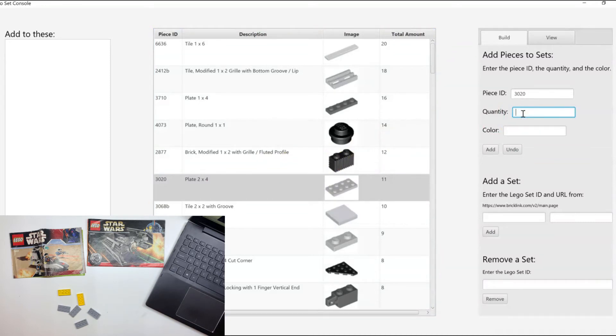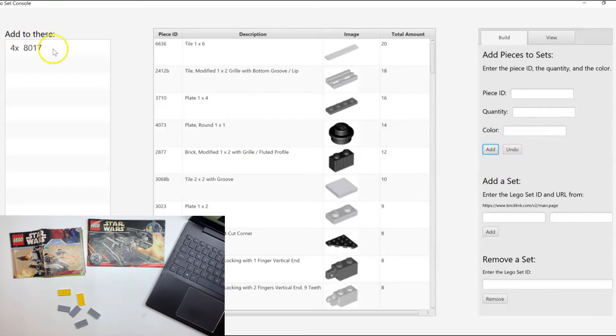After doing this, on the left panel, the set IDs pop up that need that piece, along with the amount for that individual set. The smaller sets get priority so that the smaller sets get completed faster. This keeps the building optimal because the larger sets are going to take longer anyways, and if our goal is to complete as many sets as possible, starting with the smaller ones is better.